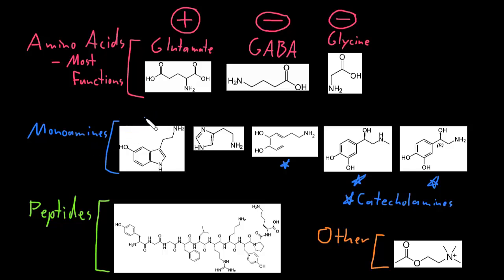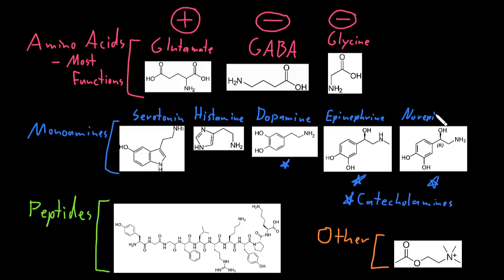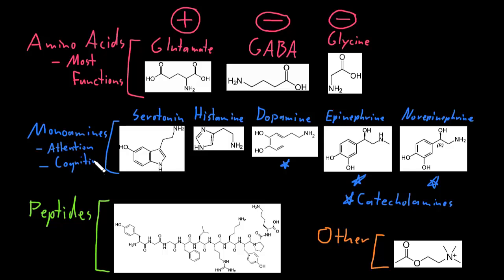There are many important monoamine neurotransmitters, but I'll mention the five most important: serotonin, histamine, dopamine, epinephrine, and norepinephrine. Dopamine, epinephrine, and norepinephrine are also called catecholamines. The monoamines play a lot of different functions in the nervous system, and in particular a lot of functions of the brain, including big things like consciousness, attention, cognition or thinking, and emotion.